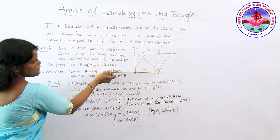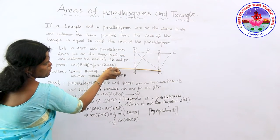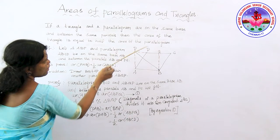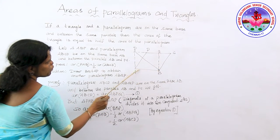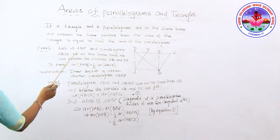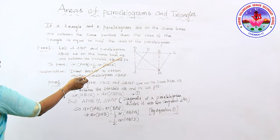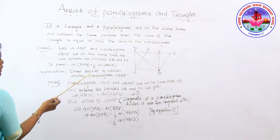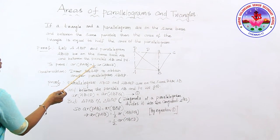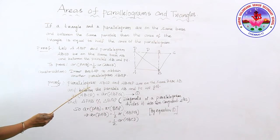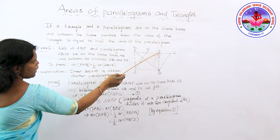The parallelogram and triangle lie between the parallels AB and CD (or CP extended). I want to show that area of triangle PAB is equal to half of area of parallelogram ABCD. In order to prove this, I am going to draw line BQ parallel to AP to obtain another parallelogram ABQP.